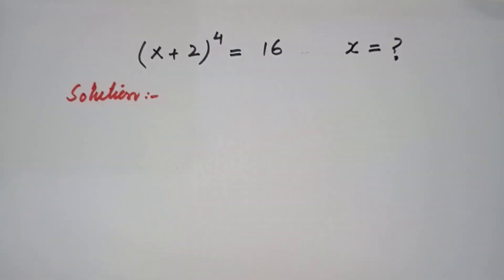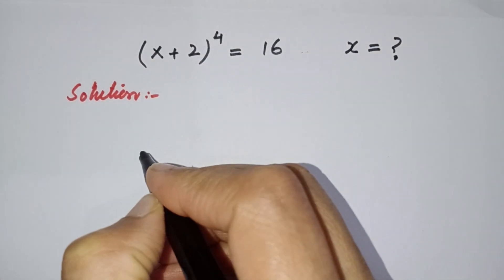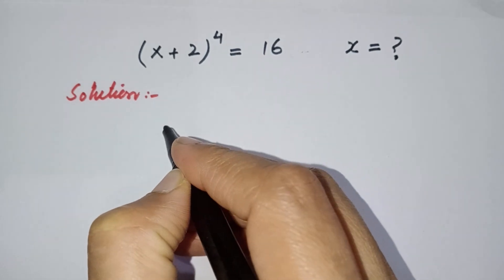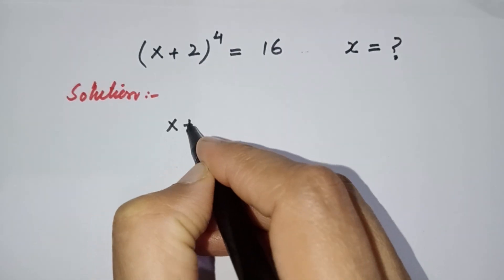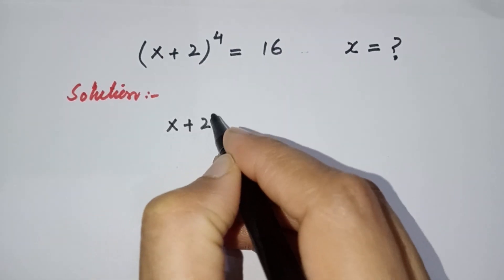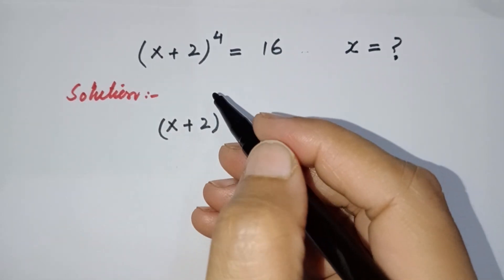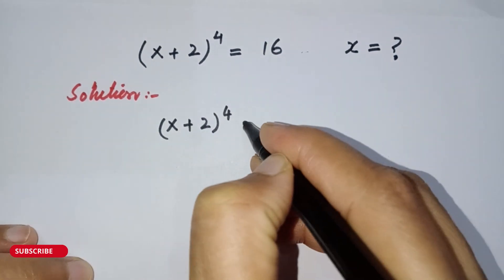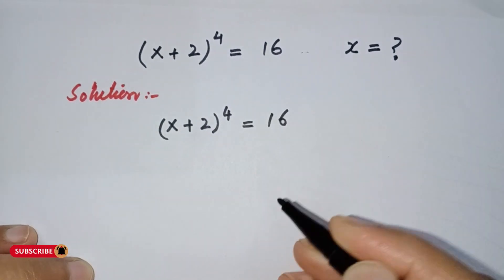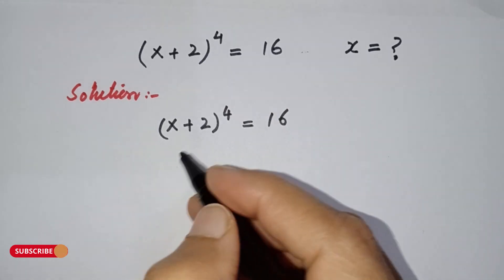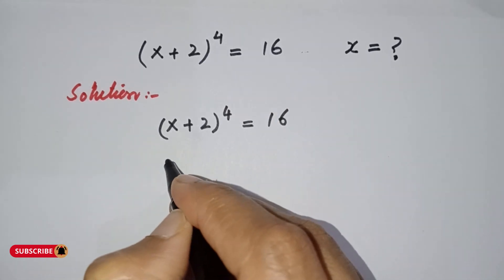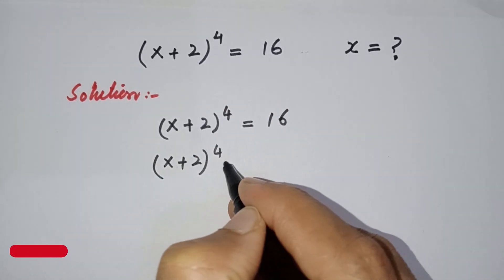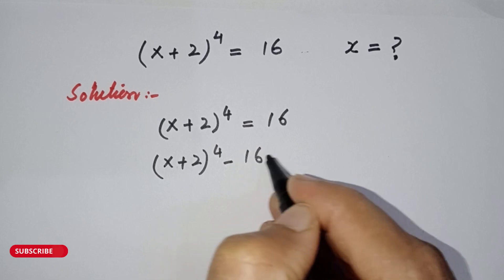Let's start our question. We will write the question first: (x + 2) to the power 4 is equal to 16. Now move 16 to the left-hand side: (x + 2) to the power 4 minus 16.